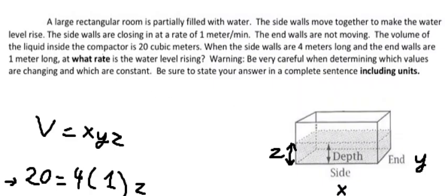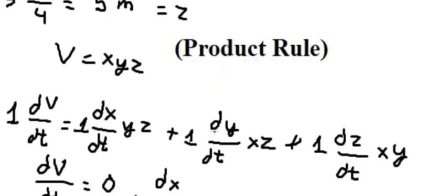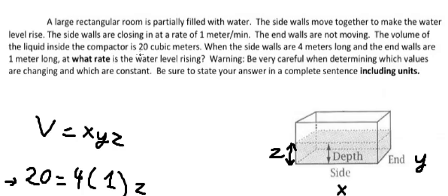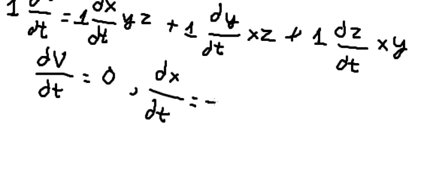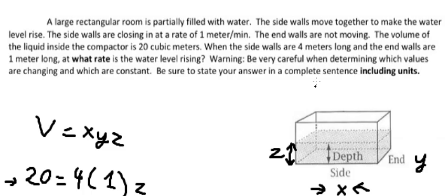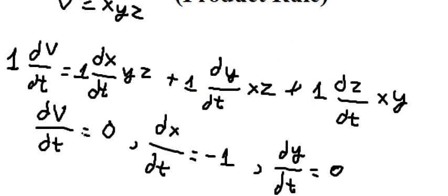Now let's consider the known values. The volume of the liquid does not change, so dV/dt equals zero. We know that dx/dt is about 1 meter per minute, but since the walls are closing — getting smaller — the sign is negative, so dx/dt equals negative 1. The end walls are not moving, so dy/dt equals zero. The question asks us to find the rate at which the water level is rising, which is dz/dt.